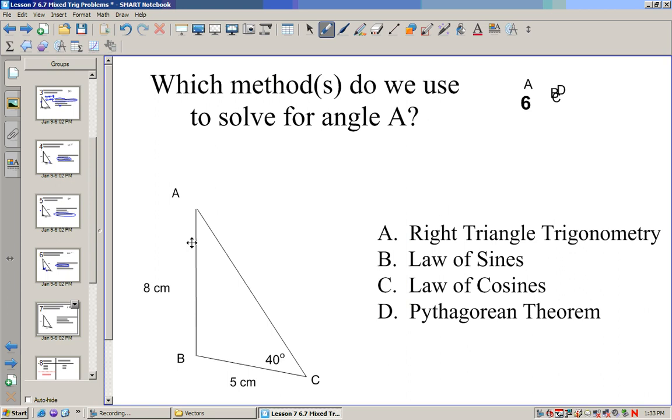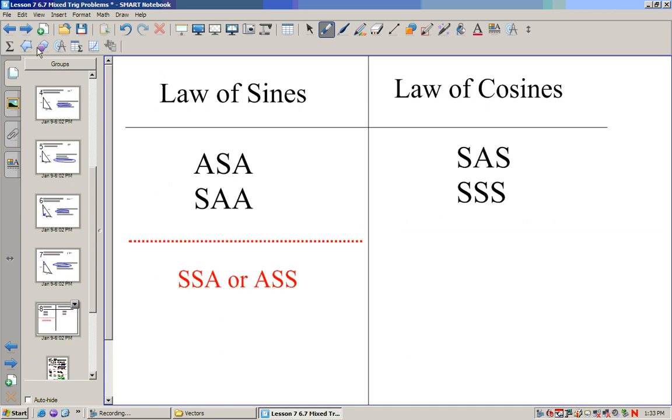In this one, if I want to find angle A, I can also use the law of sines. Sine of 40 over 8 equals the sine of A over 5. So again, we're in the law of sines. So we use the law of sines when we have angle-side-angle or side-angle-angle, or else SSA or ASS, however you remember that one. And we use the law of cosines when we have side-angle-side and side-side-side.